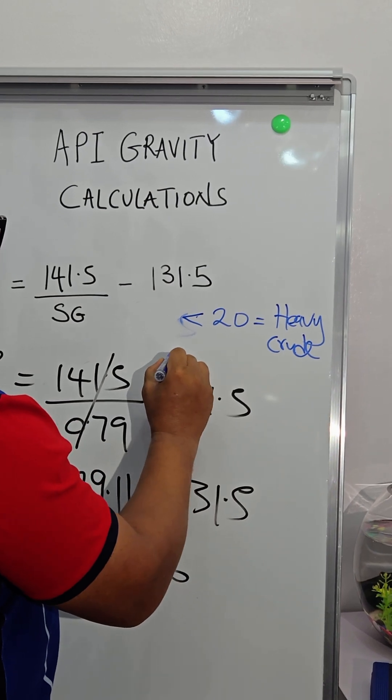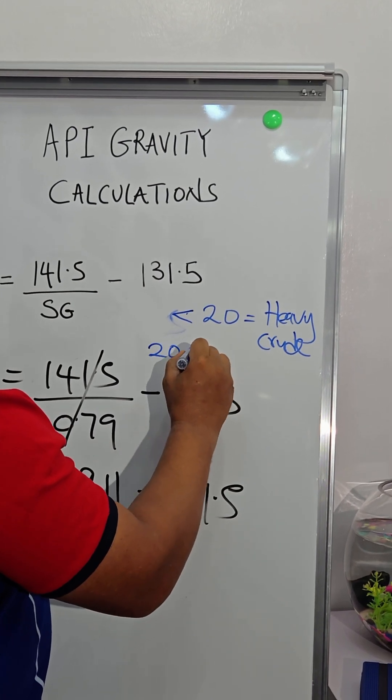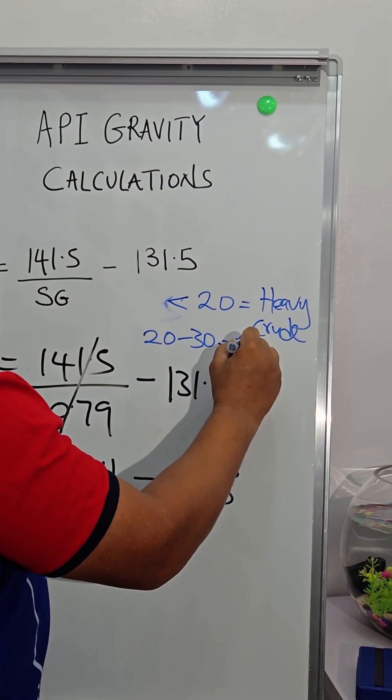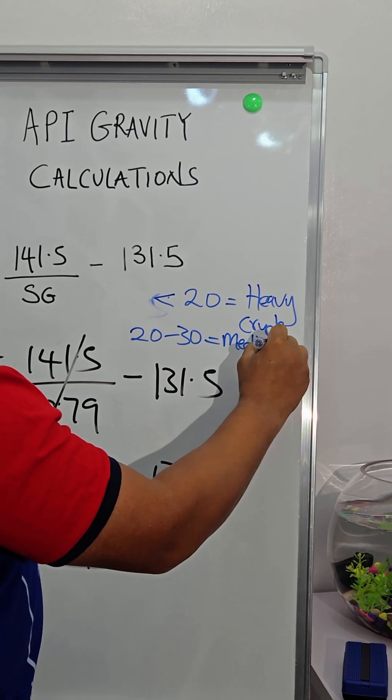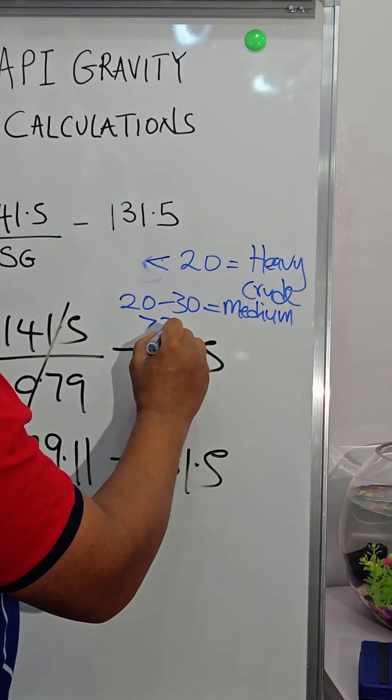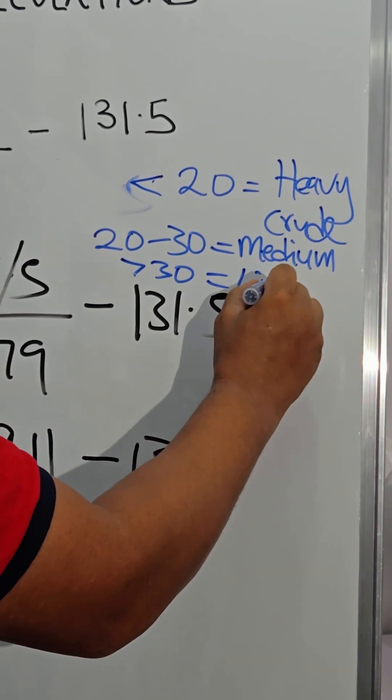If the API is 20 to 30, it's medium, and if it is greater than 30, that is very light crude.